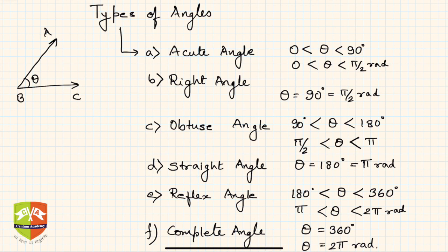We classify angles based on their measure. If the angle is between 0 and 90 degrees, we say the angle is an acute angle. Let's first go through all the types and then we can see different examples.